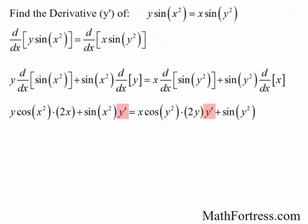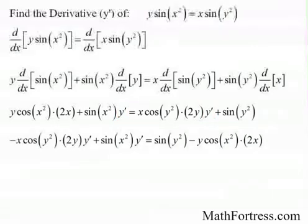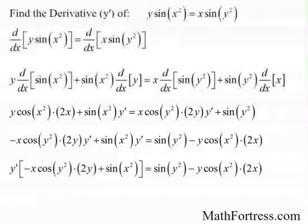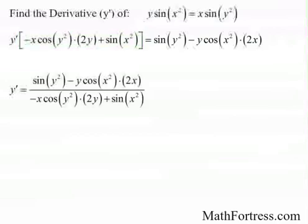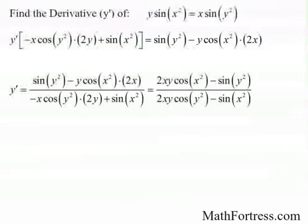The expression simplifies, and the next step is to solve for y prime. Get all terms with y prime to one side and everything else to the other side. Factoring out the y prime, and then solving by dividing through, the final derivative is equal to 2xy times cosine of x squared minus sine of y squared, all over 2xy times cosine of y squared minus sine of x squared.